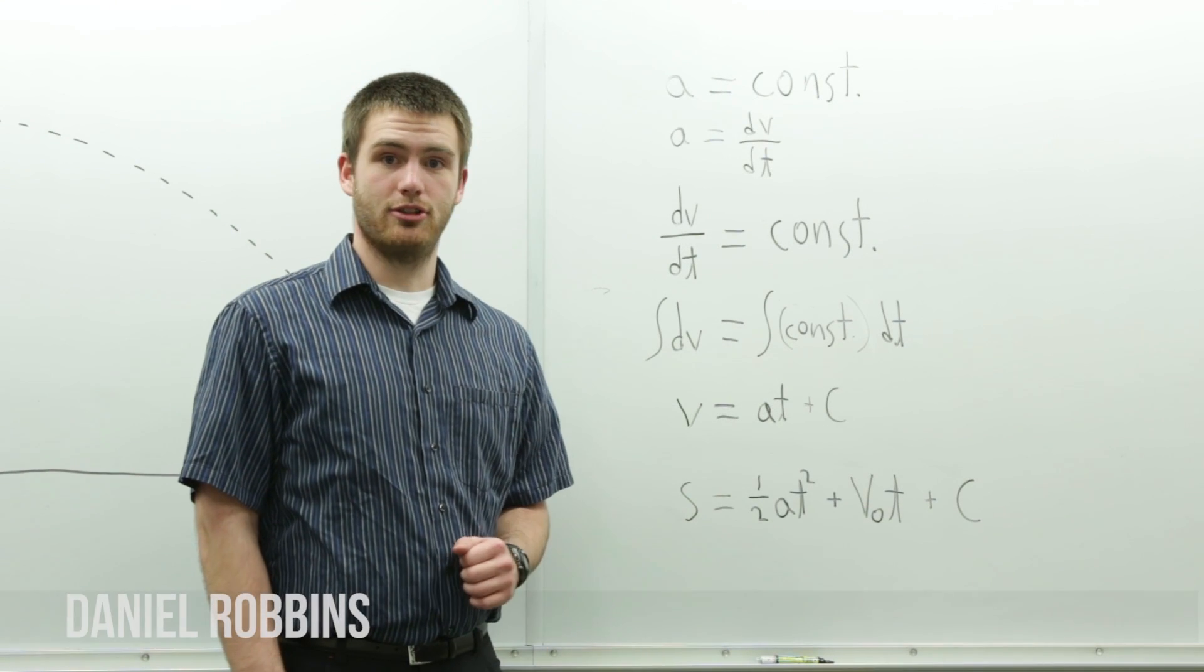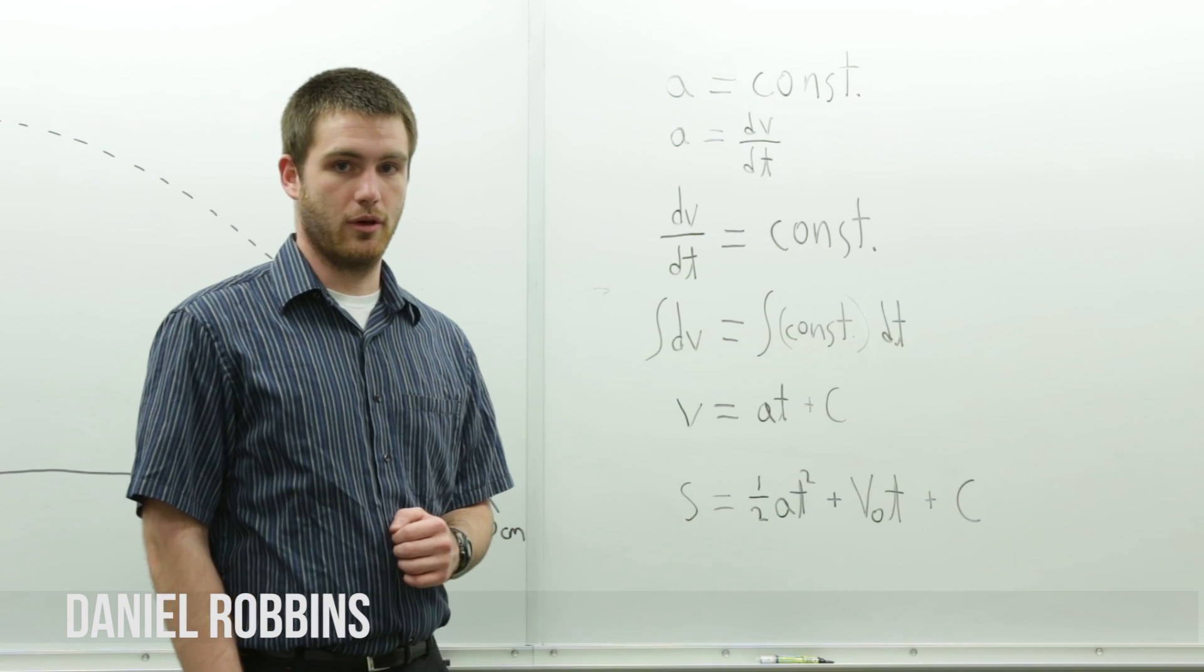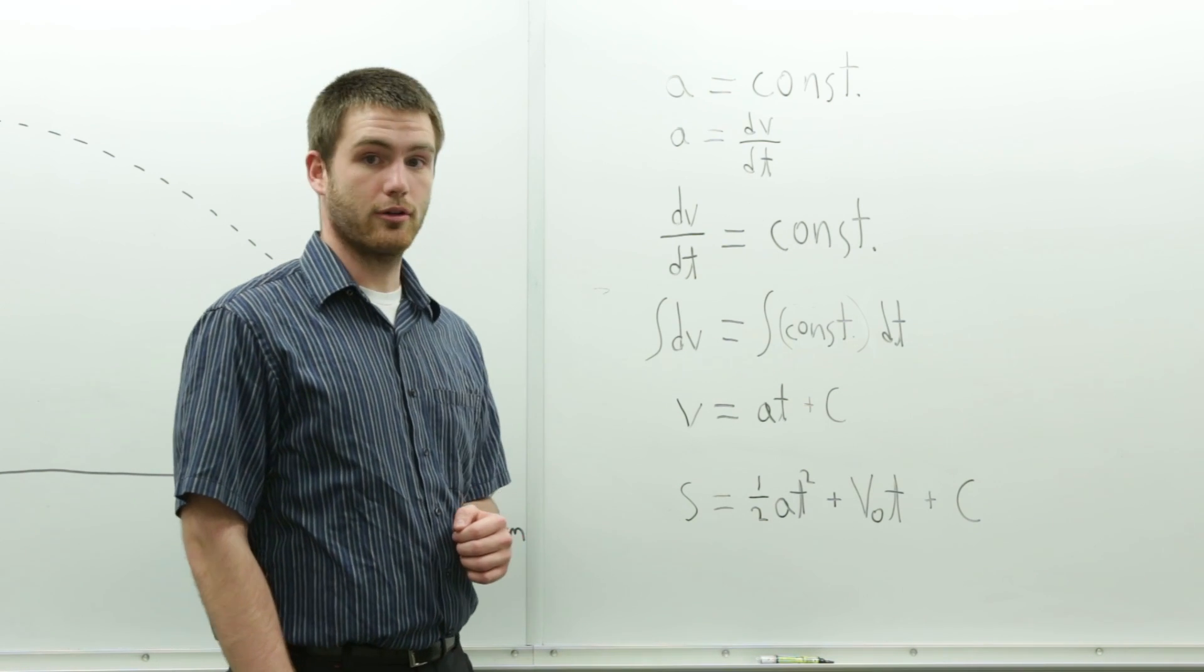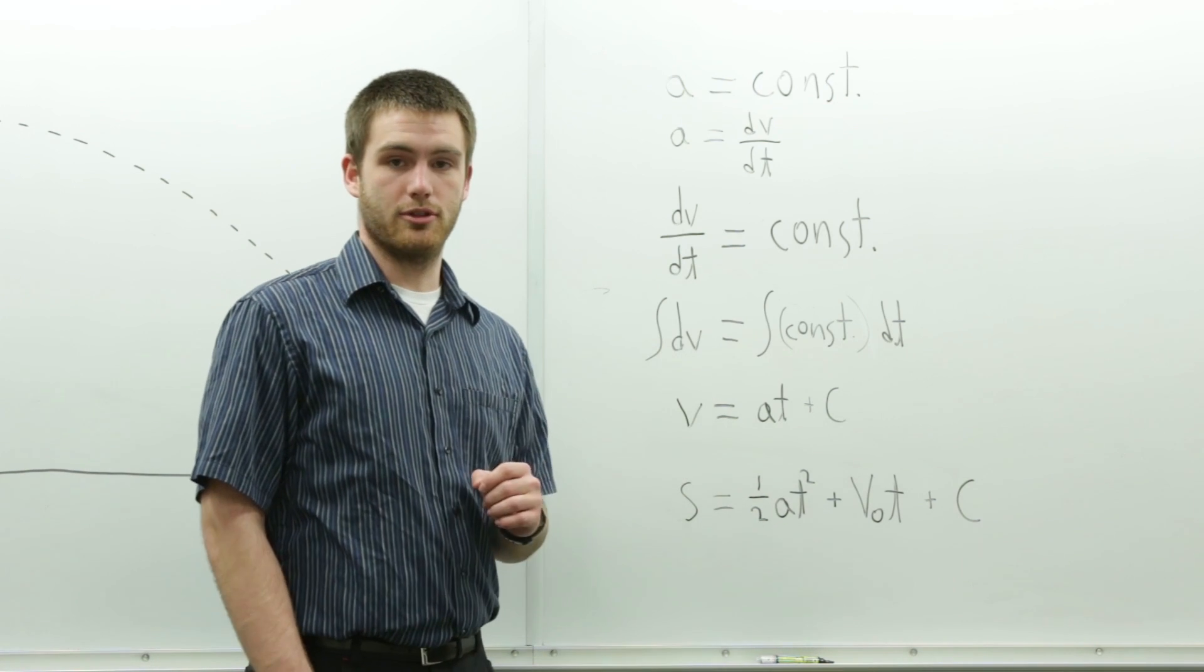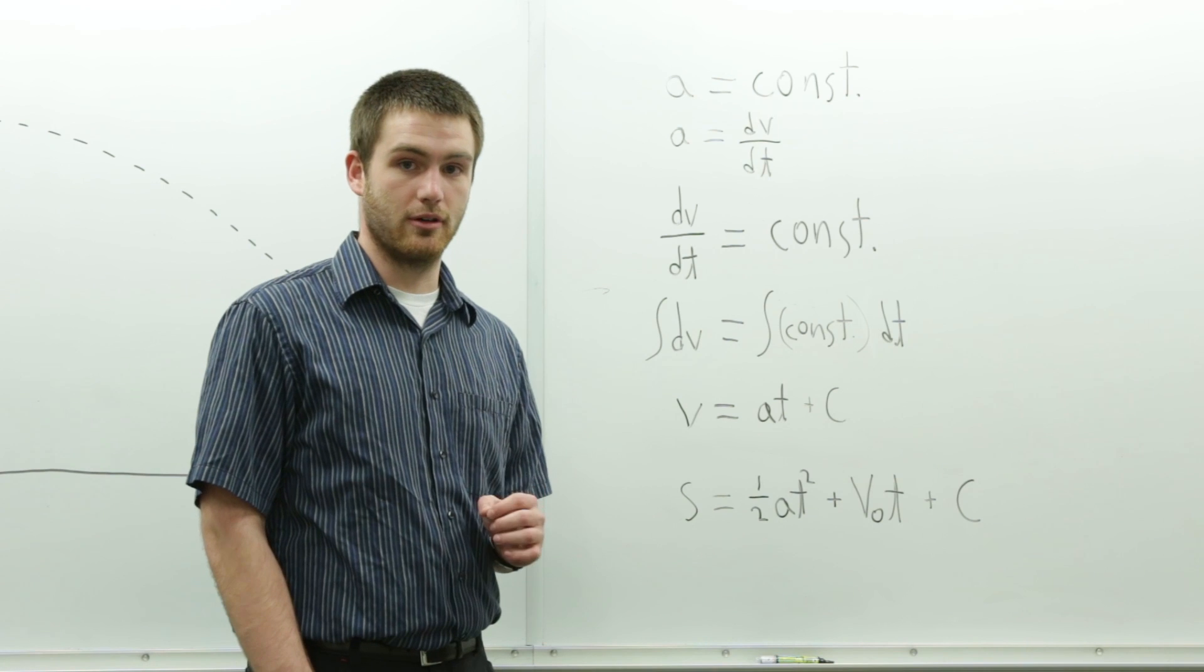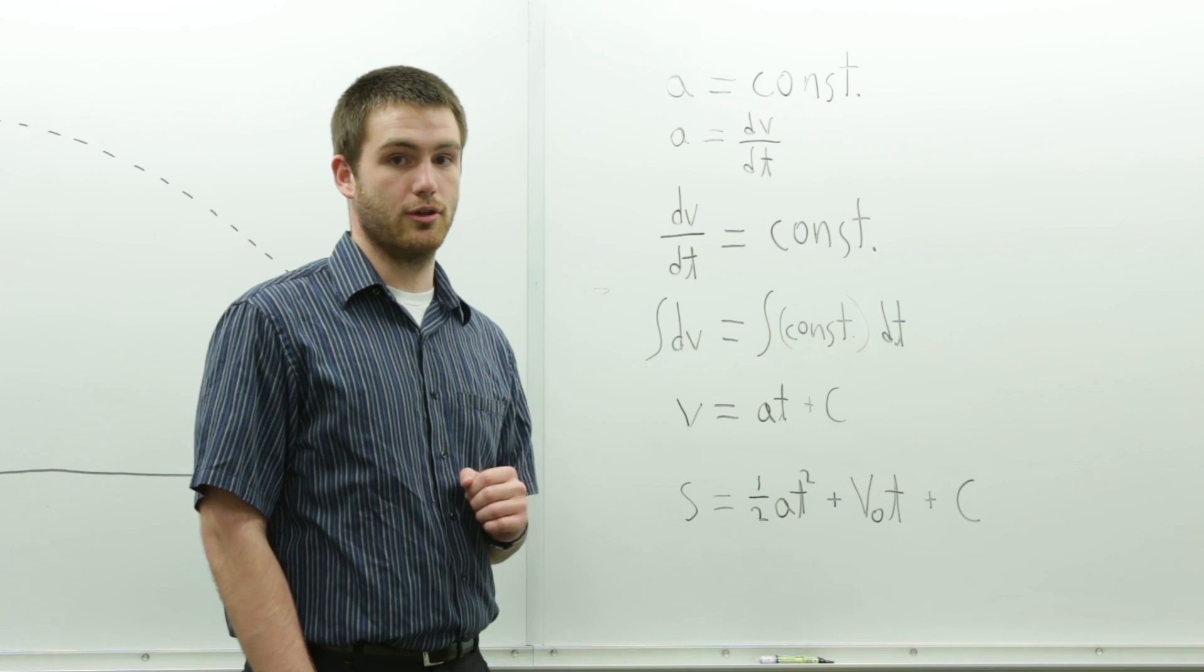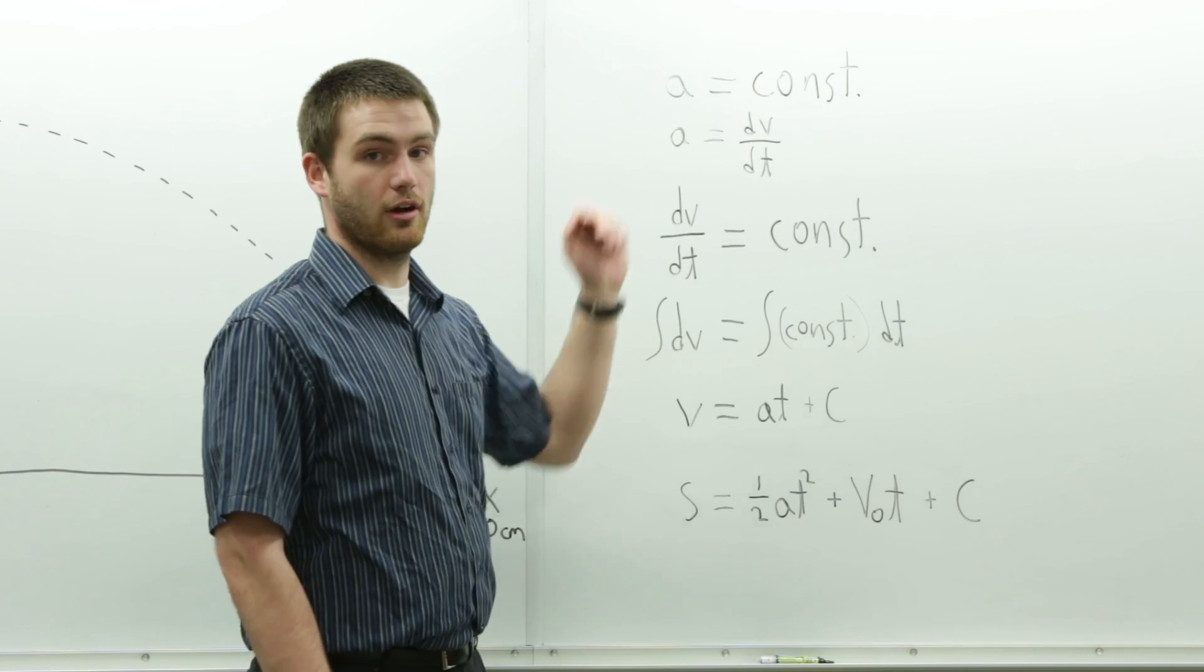I'm going to show you some derivations for how we got our equations of particle motion. Part of the assumptions for this experiment is that acceleration is constant. The only acceleration that we're experiencing on the particle is in the Y-direction, and it's the acceleration due to gravity. So our acceleration is constant.